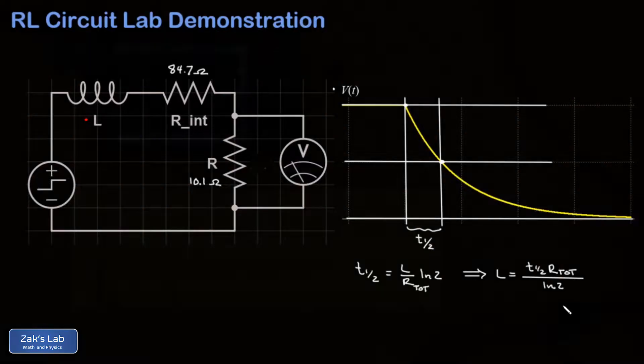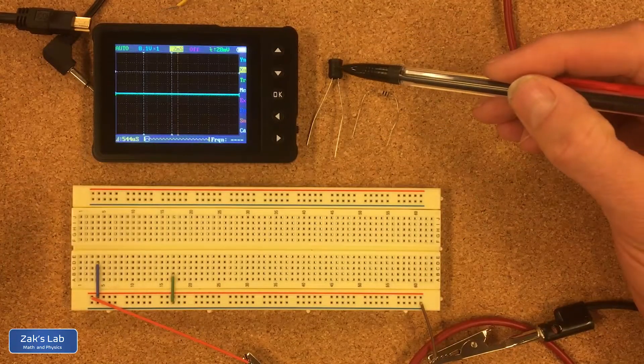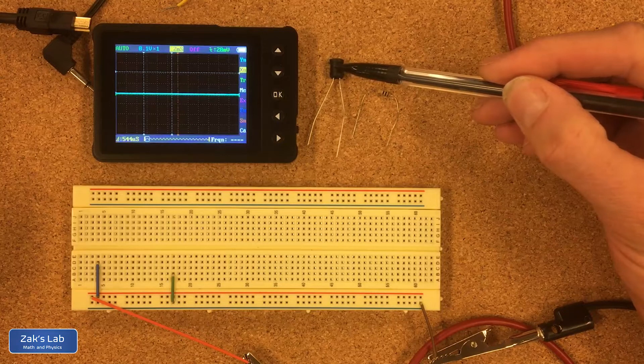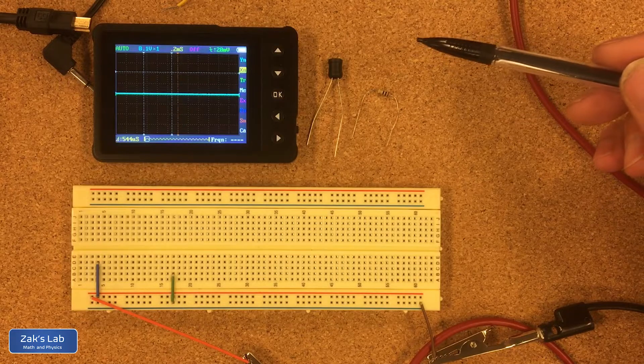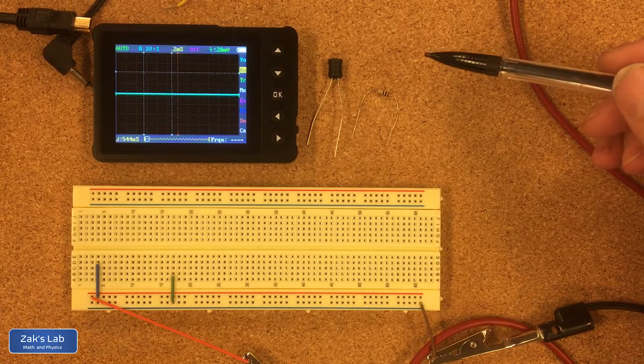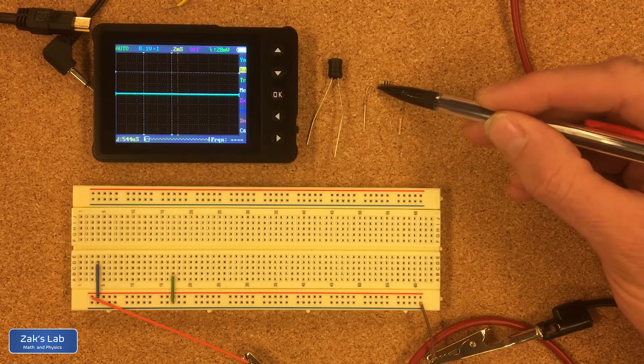So let's head to the lab and take some data. Today we're in the lab testing an LR circuit and this little black component right here, that's the inductor. It's nominally a 33 millihenry inductor but that comes with a plus or minus 10% tolerance because it's very cheap. The resistor in this picture I just measured as 10.1 ohms using a multimeter.